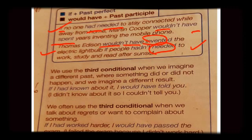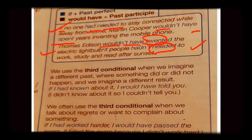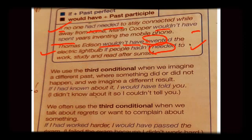To summarize the structure: the if-clause carries 'if' plus past perfect, meaning 'had' is there. The result clause carries 'would have'. The form of the main verb in both clauses is the third form. The second important structural point is that the if-clause does not have to come at the beginning of the sentence — it can come at the end.